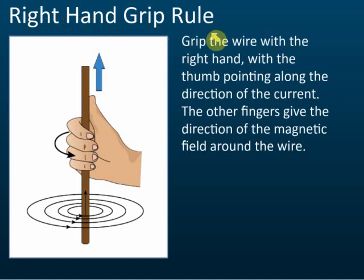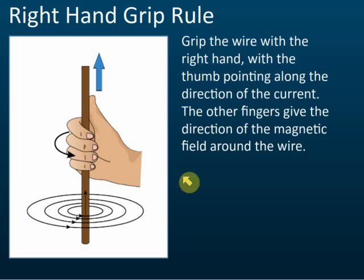Let's start with the right-hand grip rule. From the name, you should know to use your right hand — not your left hand. A lot of students are right-handed, so when they see a question in the exam they have their right hand writing and straight away use their left hand to find the field. That's not correct. Put down your pen and use your right hand to find the direction of the field.